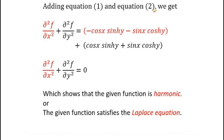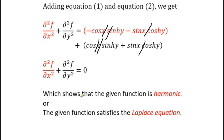Adding equation 1 and equation 2, we get partial square f over partial x square plus partial square f over partial y square, which equals: the value of partial square f over partial x square is minus cos(x)sinh(y) minus sin(x)cosh(y), and the value of partial square f over partial y square is cos(x)sinh(y) plus sin(x)cosh(y). By solving, we cancel these two terms as they have opposite signs, and similarly these two expressions also cancel. So partial square f over partial x square plus partial square f over partial y square is equal to 0, which shows that the given function is harmonic.